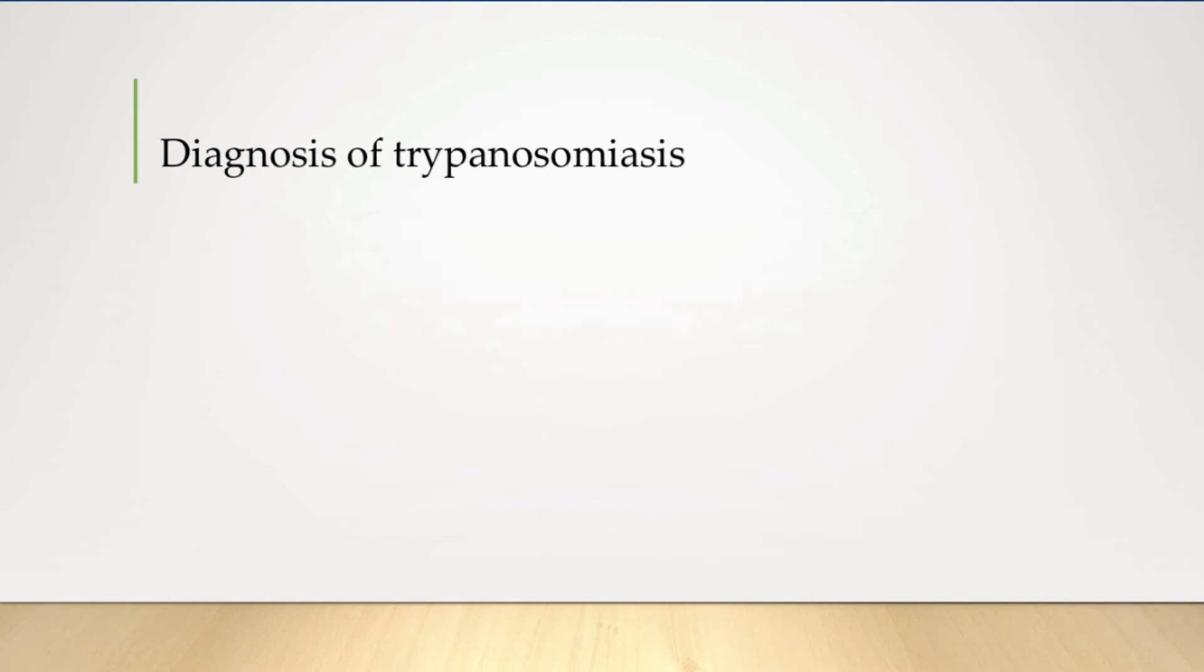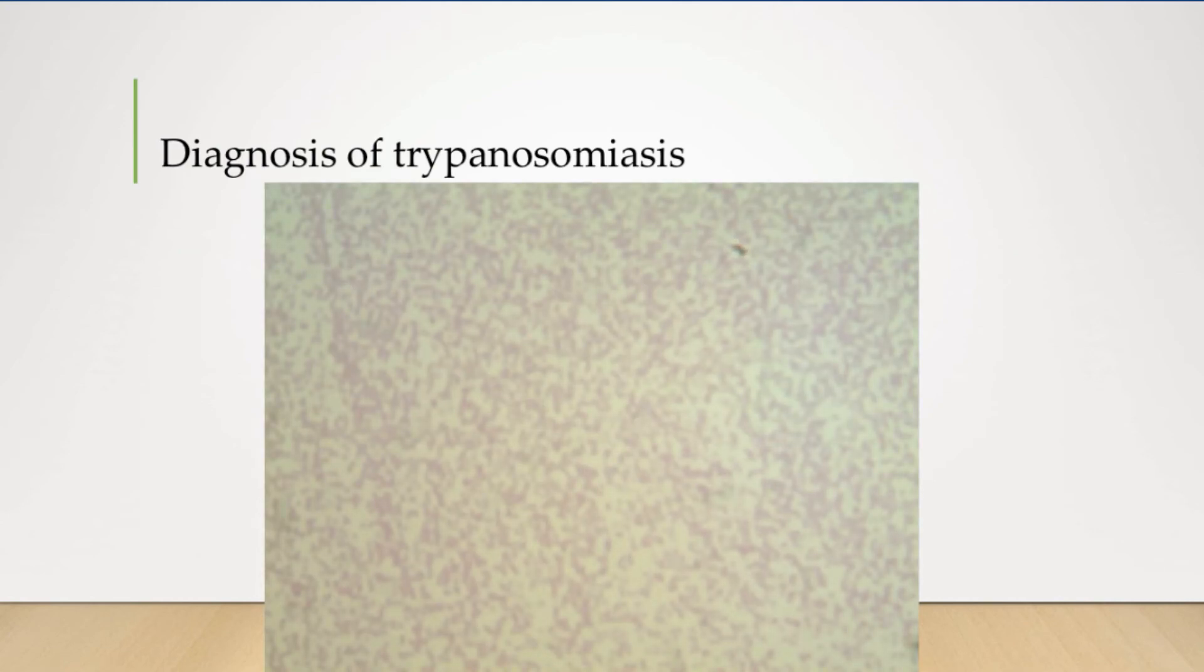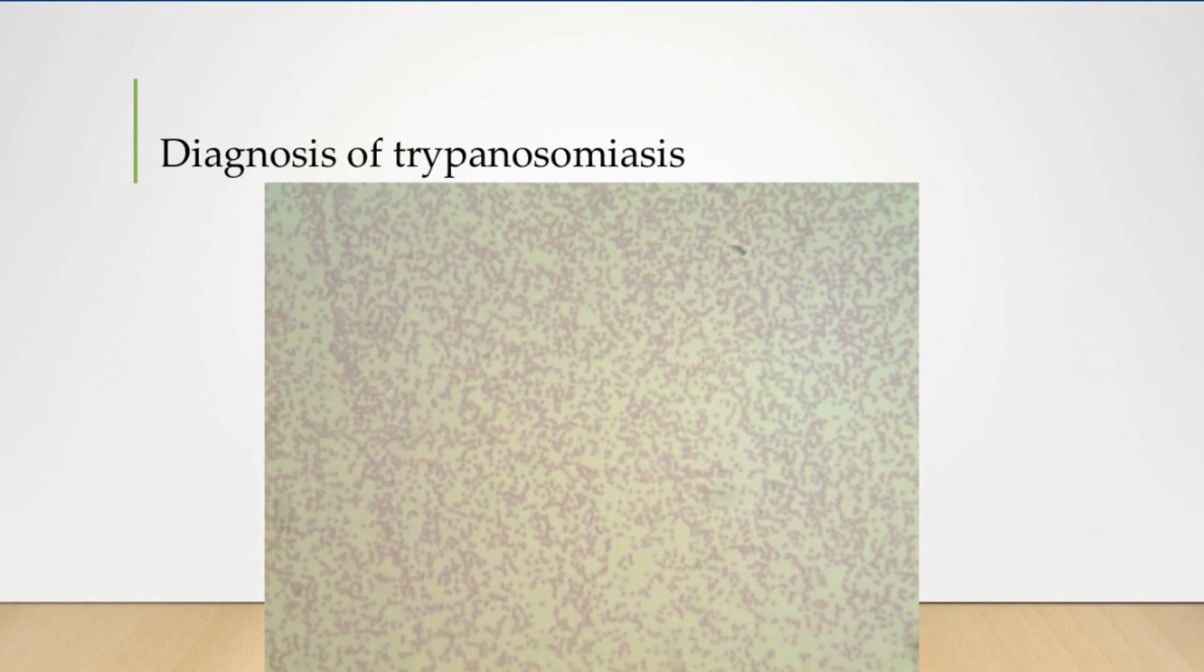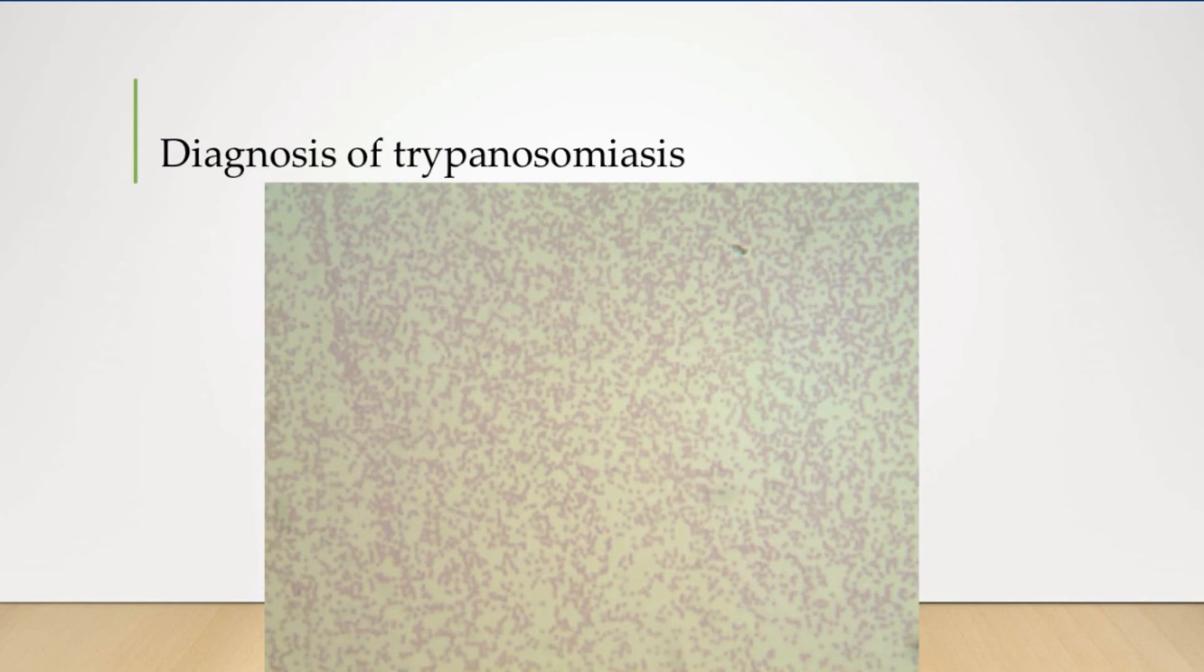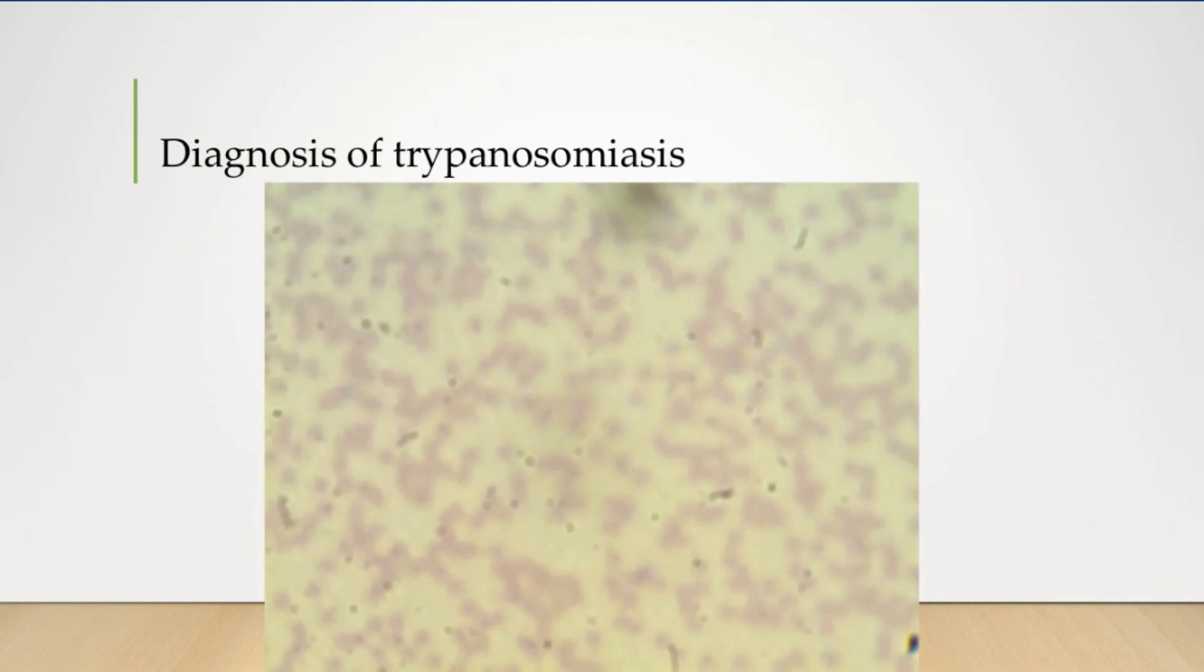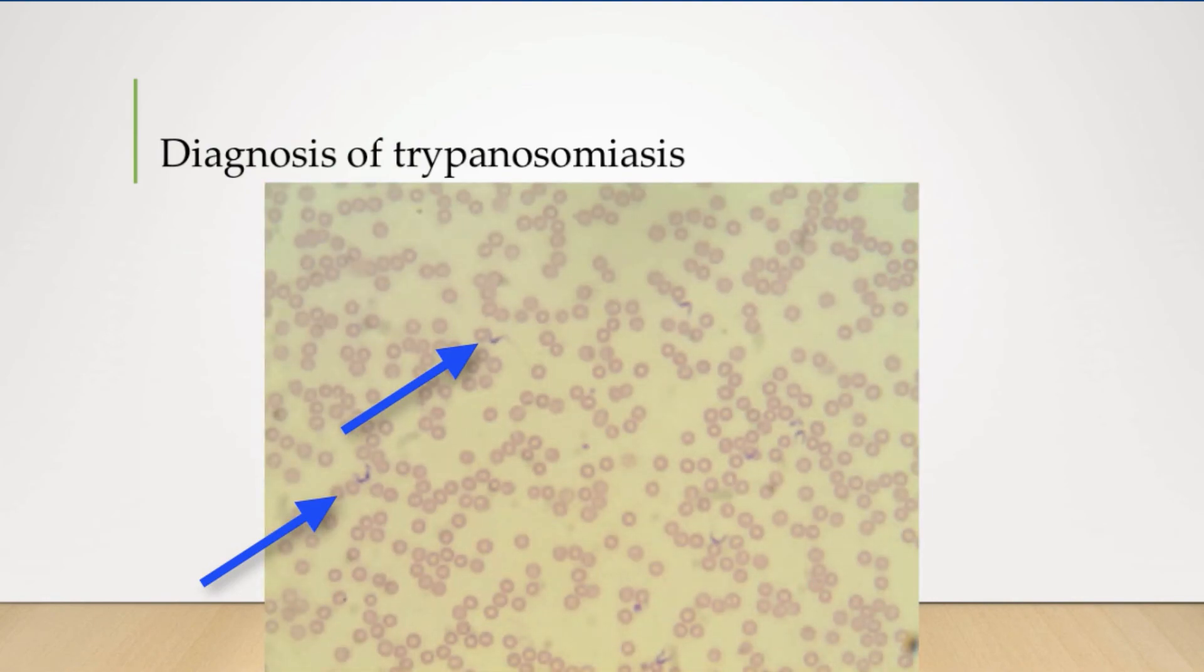Both African and American Trypanosomiasis are diagnosed by identifying the flagellated forms of the protozoan in a blood smear. Again, start at a 100-fold magnification, then increase the magnification to 400-fold. Identify the purple flagellated protozoan parasites in between the red blood cells.